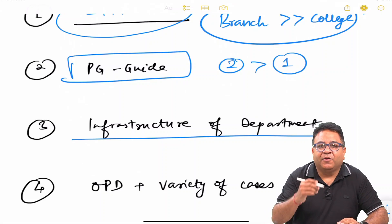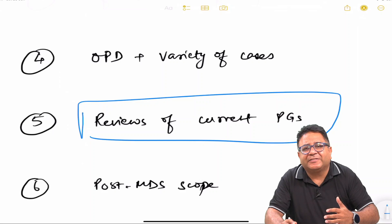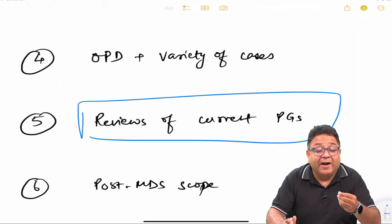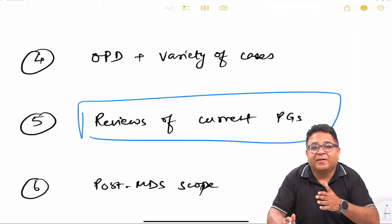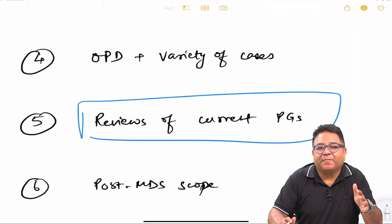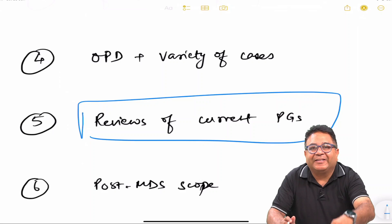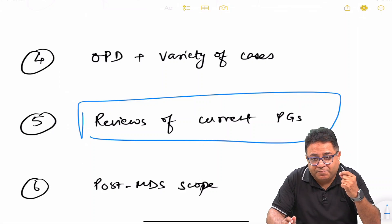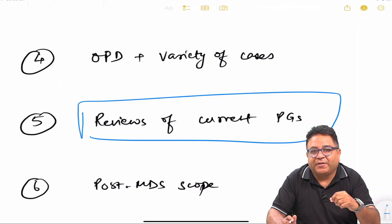Make your decision based on that. Always take reviews of current year PGs—maybe first year, second year, third year—and be well informed. A sincere advice to everybody is: visit that college. If you think you are going to get this college, this branch, this department, please start visiting the colleges before making the choices. Don't just be very random in mentioning the choices.